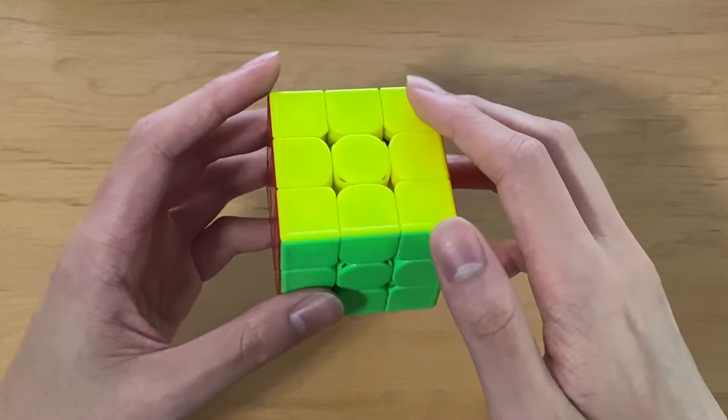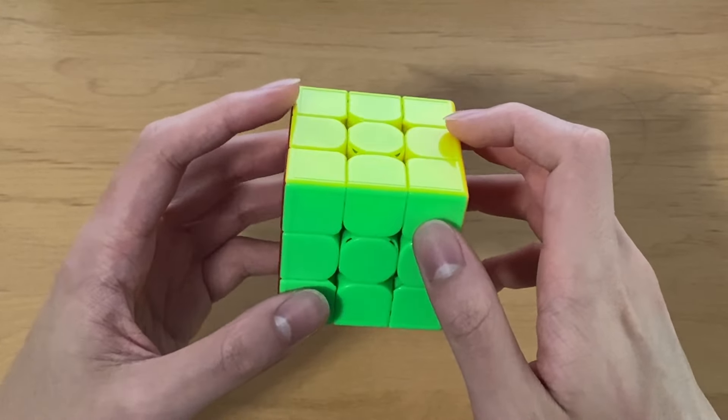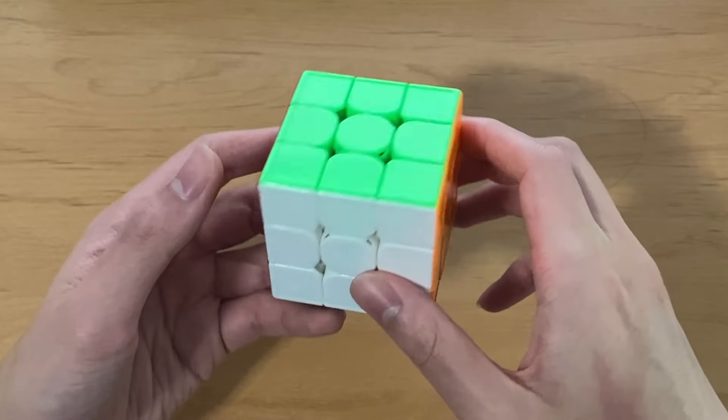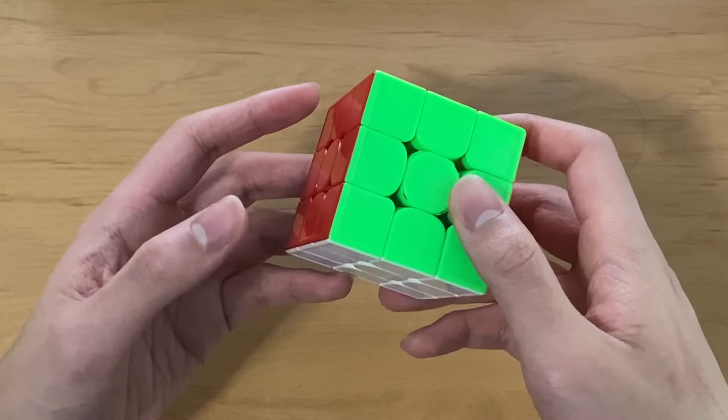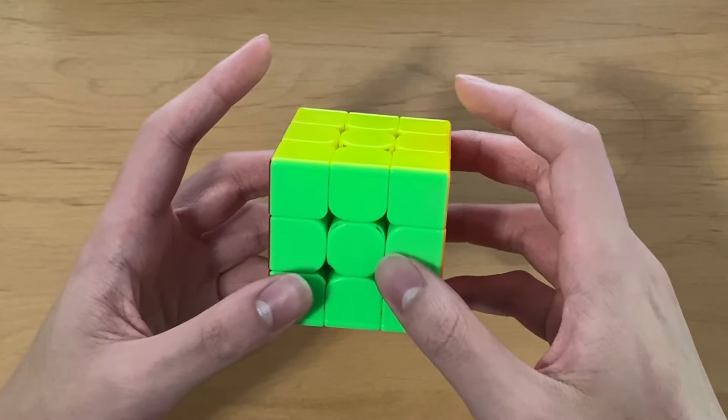A decent alternative to the GTS3M is the Moyu YS3M ball core. That one is pretty good, but the slices I find are a little bit harder to turn than these slices, so I prefer to use this cube.